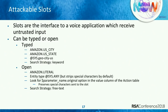Slots have types, and that determines if you can attack them. If the type is typed — meaning a specific thing like a U.S. city or state — the input is expected to be one of those. But there are open slot types too, like when looking up a dictionary definition. In Amazon, that's type 'literal'; in Google Dialogflow, it's 'sys.any' — but you have to find an application with the parameter name defined as '.original' in the action table. That allows special characters to be processed in the slot value, and that's where an attacker puts SQL injection, cross-site scripting, or whatever payload.